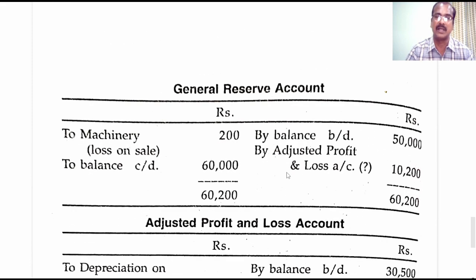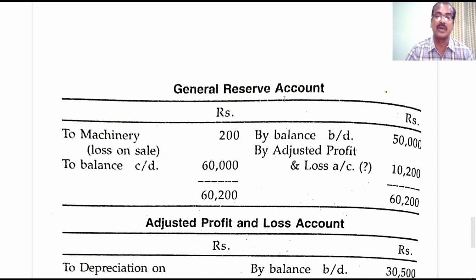Next we move to the general reserve ledger account. Being a credit item, the opening balance of 50,000 is written on the credit side and the closing balance of 60,000 on the debit side. The loss on sale of machinery of 200 rupees was adjusted against general reserve — entry: general reserve account debit to machinery account 200. The balancing figure comes on the credit side valued 10,200, which is nothing but the transfer of profit from the profit and loss account to general reserve. Entry: adjusted profit and loss account debit to general reserve account.